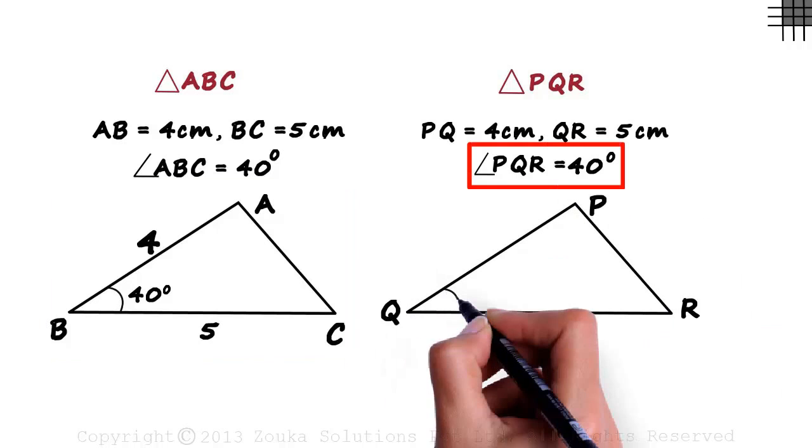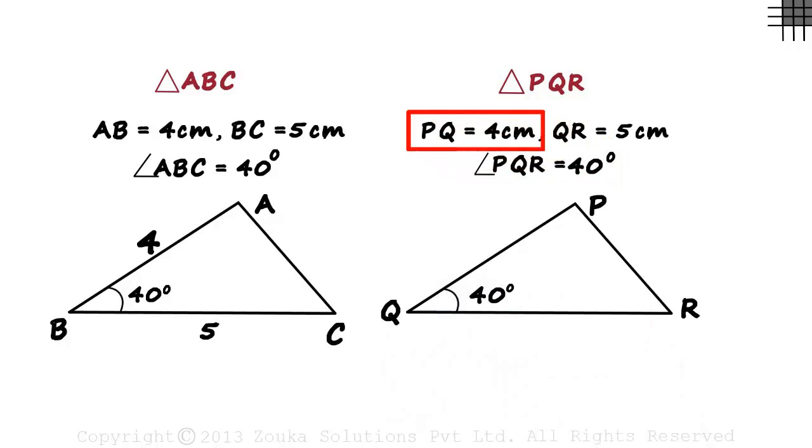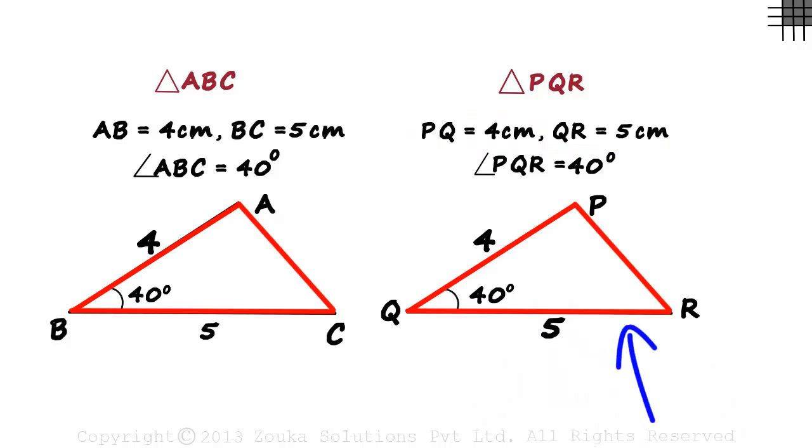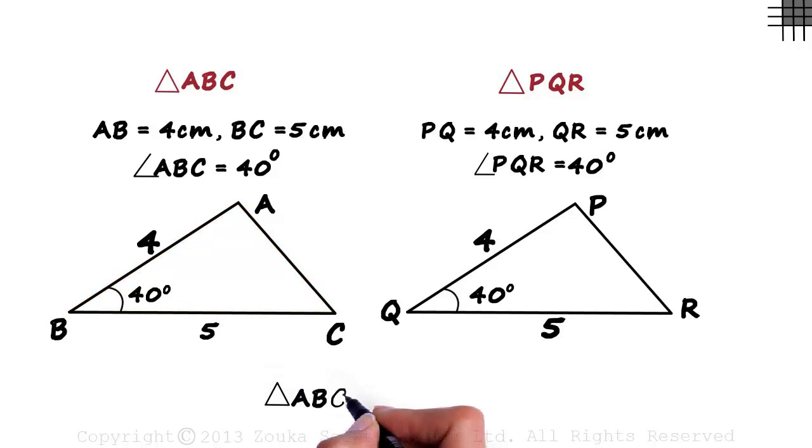Angle PQR is 40 degrees, PQ is 4 centimeters, and QR is 5 centimeters. If we take this triangle over to this one, they will overlap exactly. That is why we can say that triangle ABC is congruent to triangle PQR.